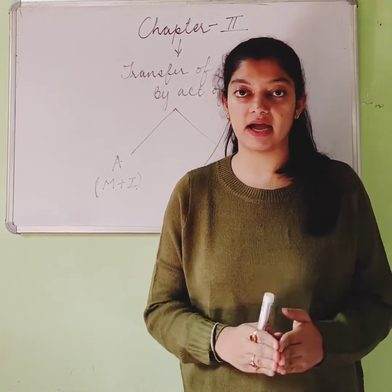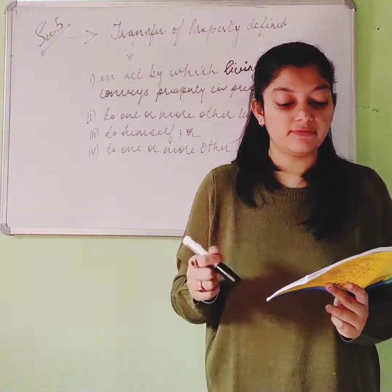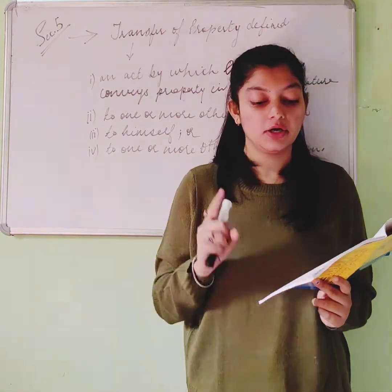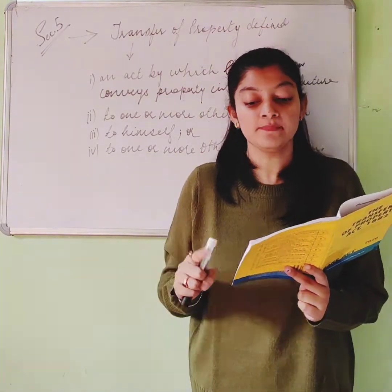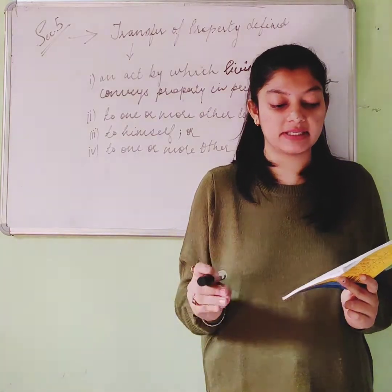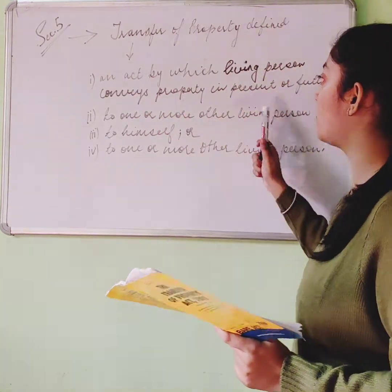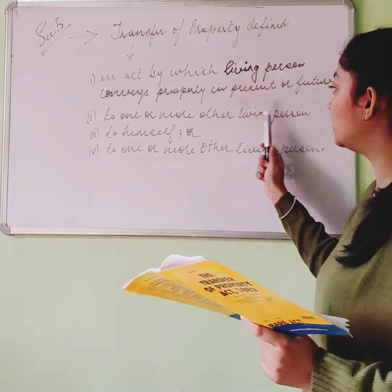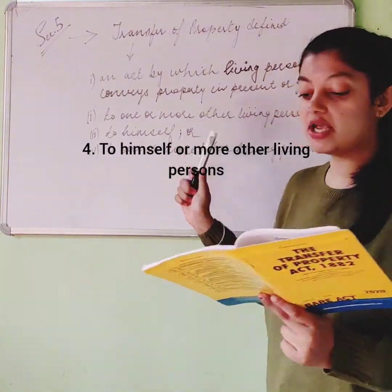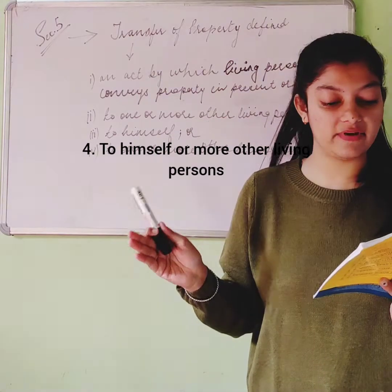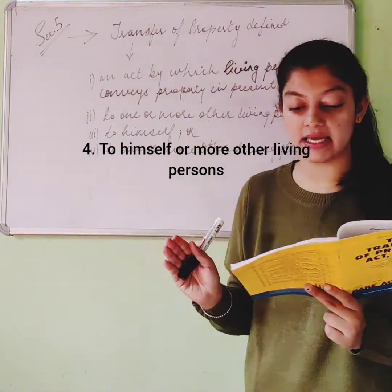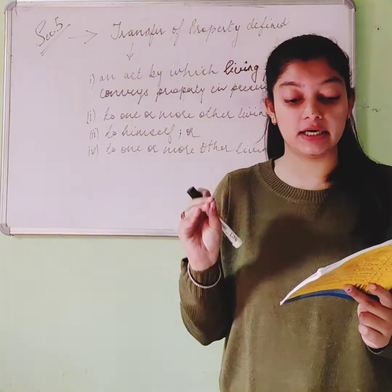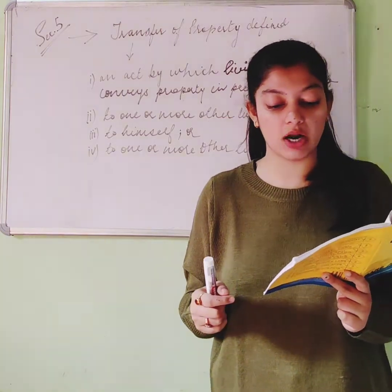Section 5 defines 'transfer of property.' As per the bare act, transfer of property means an act by which a living person conveys property — in present or future — to one or more other living persons. In this section, 'living person' includes a company, association, or body of individuals, whether incorporated or not.